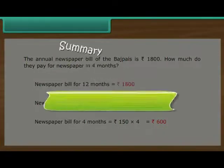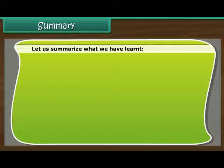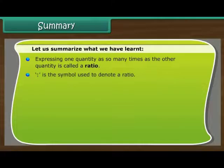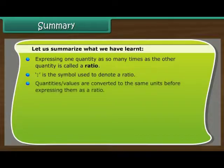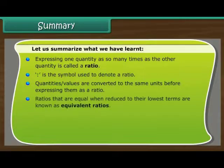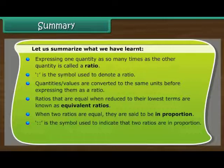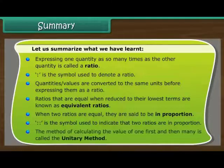Summary. Let us summarise what we have learnt. Expressing one quantity as so many times as the other quantity is called a ratio. Colon is the symbol used to denote a ratio. Quantities and values are converted to the same units before expressing them as a ratio. Ratios that are equal when reduced to their lowest terms are known as equivalent ratios. When two ratios are equal, they are said to be in proportion. The method of calculating the value of 1 first and then many is called the unitary method.